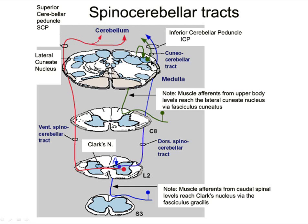In reality, the cuneocerebellar tract contains the same information as the dorsal spinal cerebellar tract: unconscious proprioception. You can be sleeping and your body still knows where your arm is or what state your biceps are in. It's unconscious proprioception.